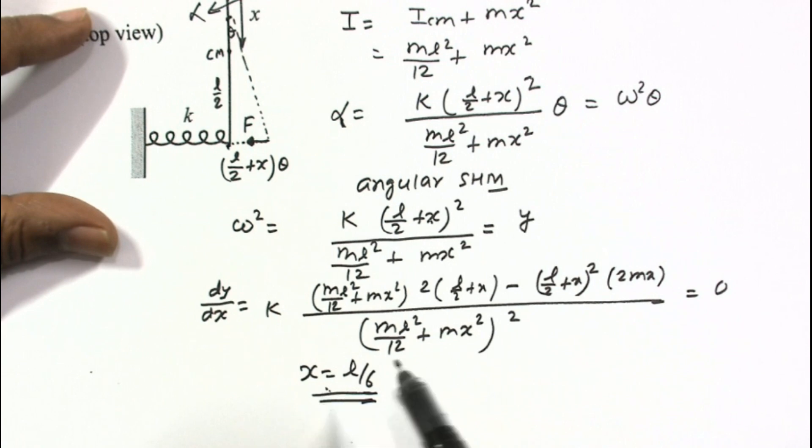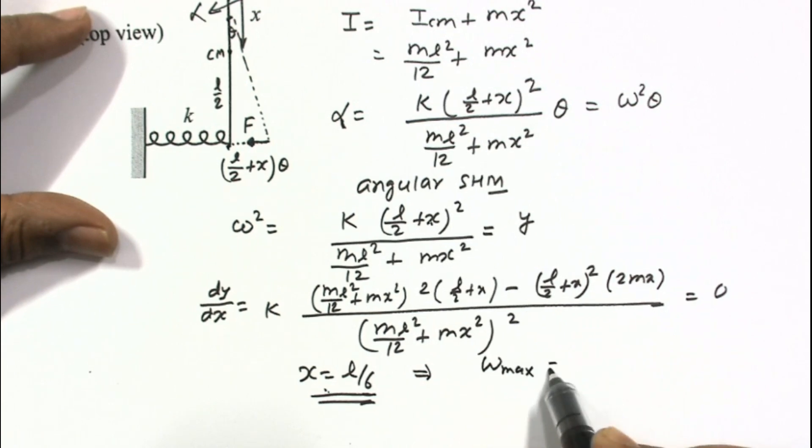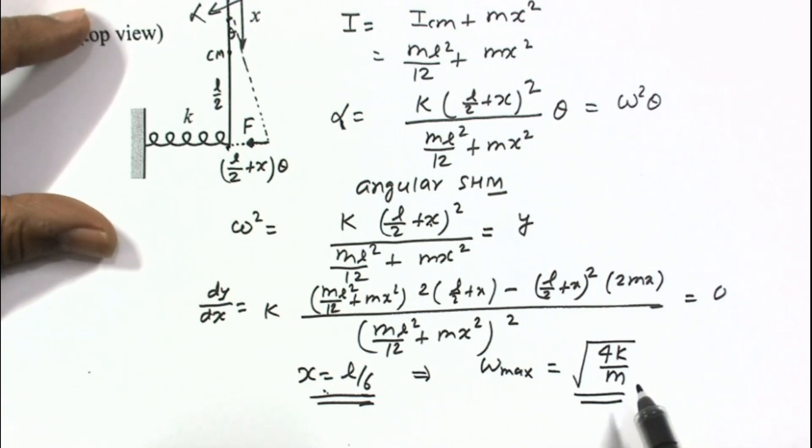For X is equal to L by 6, omega is maximum. If we put this value, then omega maximum will come out as under root 4K by M. So this is the maximum omega for this situation.